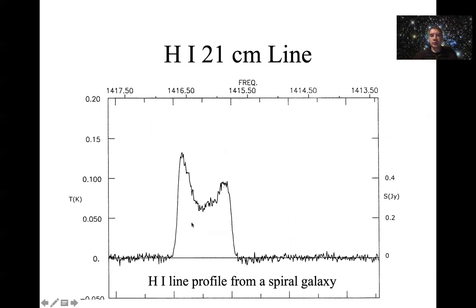Here I'm showing you an example of a line profile, this time from a spiral galaxy, where you can see one of these double-peaked line profiles. Again this is near this frequency of 1420, which is the rest wavelength of the 21 centimeter line.